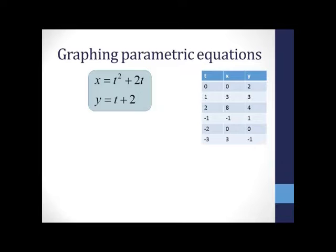For every choice of our parameter t, we generate an ordered pair for x and y. For instance, when t equals 0, we see x equals 0 and y equals 2, so we get the ordered pair 0, 2. When t equals 1, we get 3, 3. By generating enough points, we can begin to see the pattern formed by our curve.